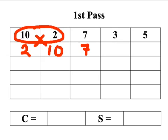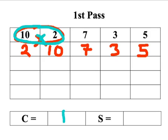I'm not going to do anything with the rest of the list, but I'll fill the rest of the numbers in the boxes for completeness. At the end of the first pass, I'm going to tally up what we've done at the bottom. We've done one comparison and one swap.